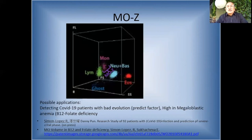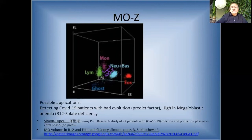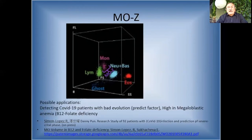Monocyte Z is the monocyte volume - I will discuss this in my COVID-19 hematology analysis talk during this conference. The size of monocytes is important for megaloblastic anemia - I have a patent and articles about that. In folate deficiency anemia the monocyte size is also important because in macrocytic anemias monocytes and neutrophils are also big. We can use neutrophil and monocyte macrocytosis for the diagnosis of these disorders. Monocyte Z can also predict the severe critical phase of COVID-19 disease.